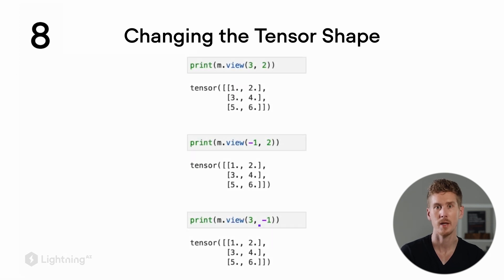If we use -1 for the column placeholder, it will automatically replace it with the number 2. That's because there's only one way to have a tensor with 6 elements if there are already 3 rows: 3 times 2.